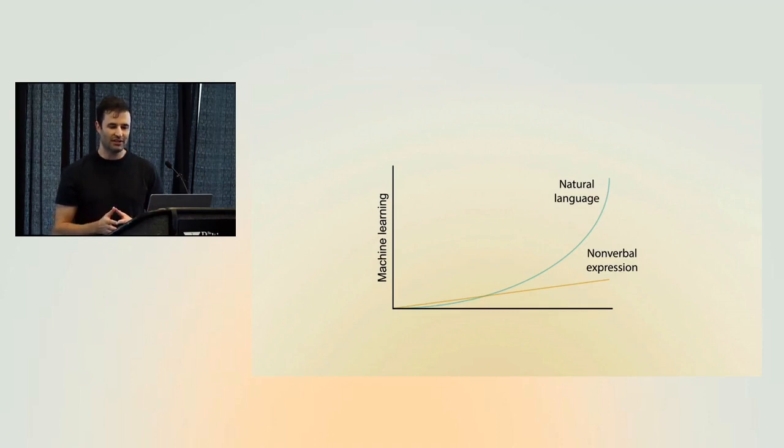Lately machine learning has been making exponential strides in understanding natural language but we still have a long way to go when it comes to understanding nonverbal expression. I think part of that has to do with the immaturity of the science of emotion and expressive behavior and another big part of it is that historically we've lacked good data to train models of expressive behavior.